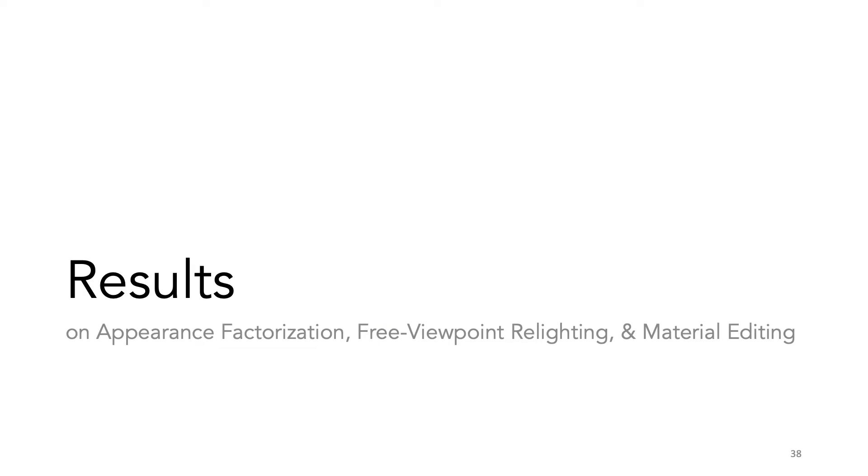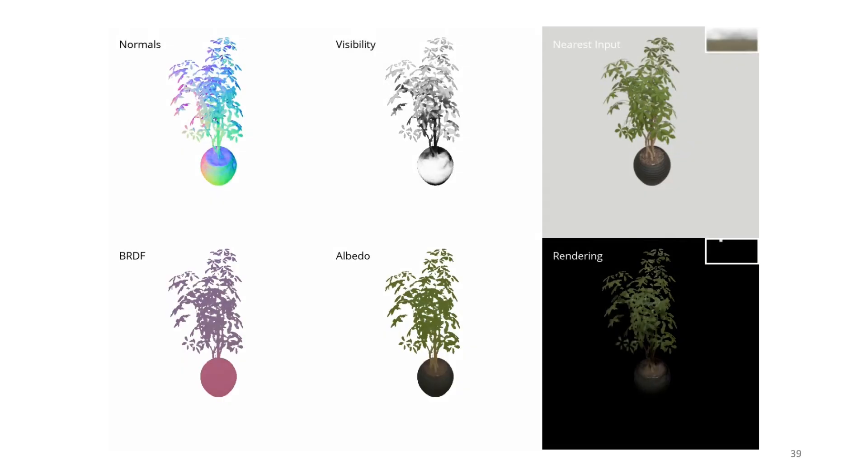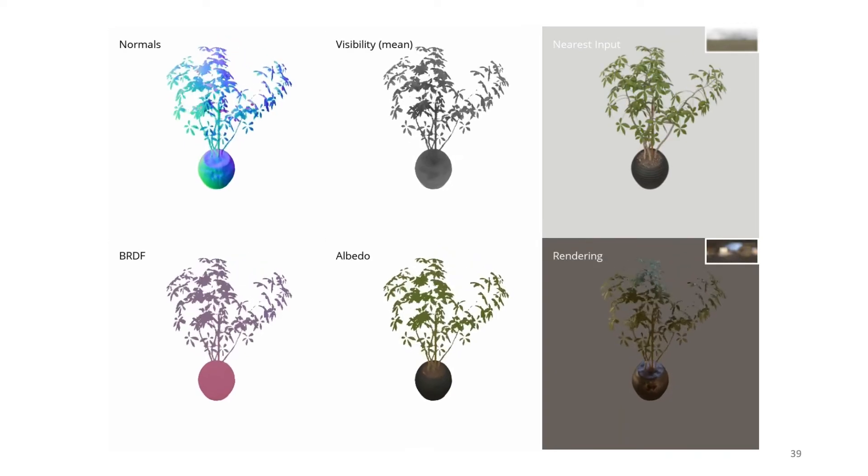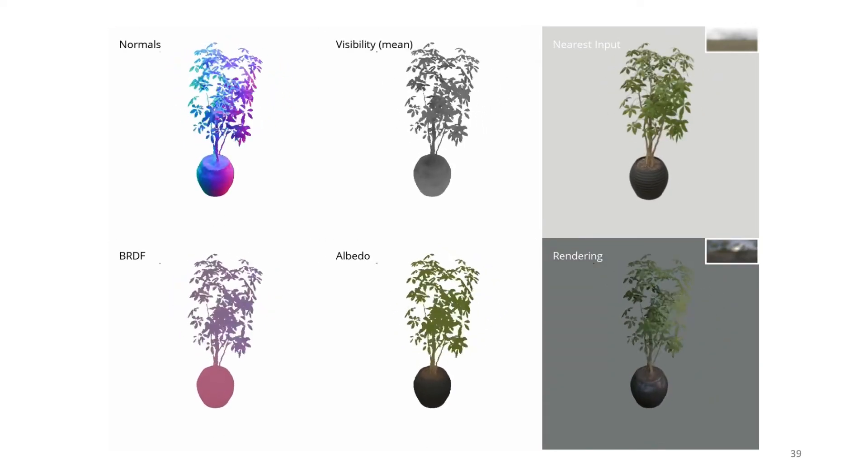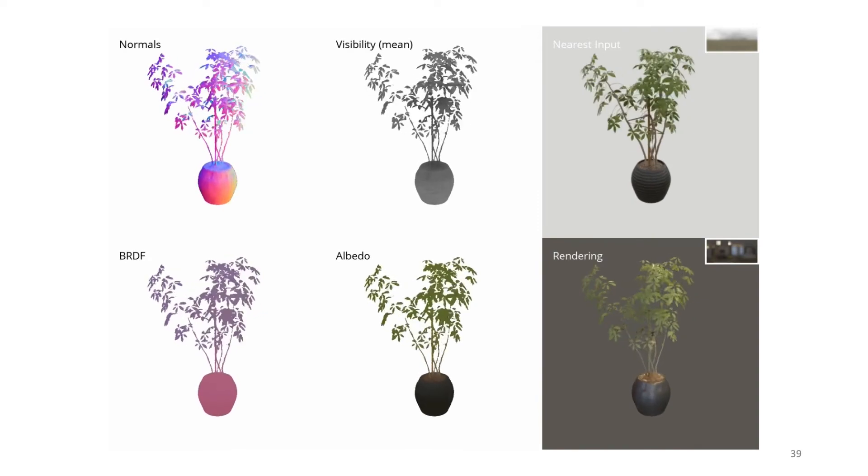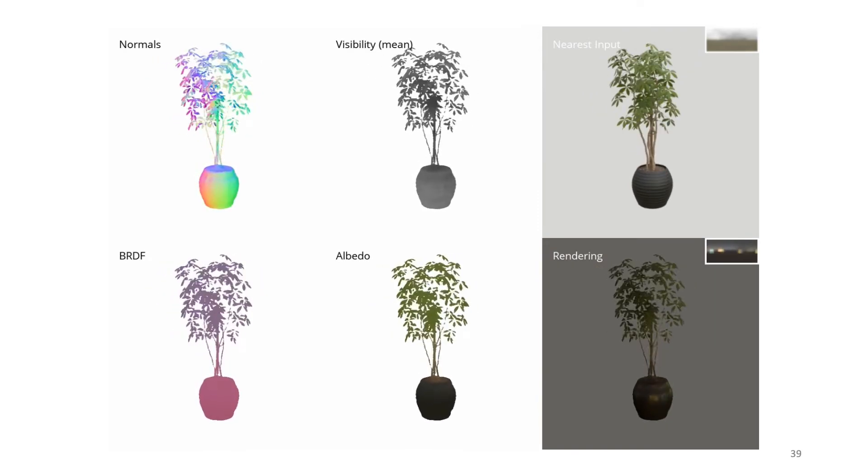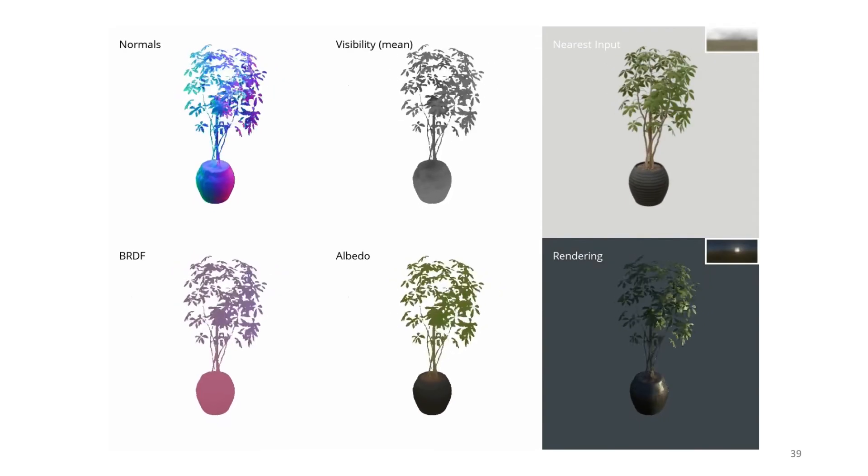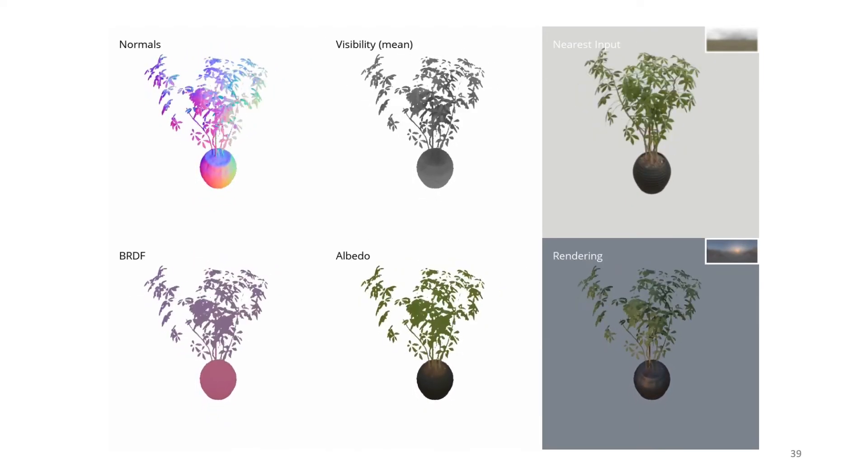Let's look at some results. We first relight the scene with a single point light, and then some full light probes. As shown here, NeRFactor achieves good geometry despite the complexity. It also predicts one material for the vase and another for the leaves. Note how the albedo is shading-free.